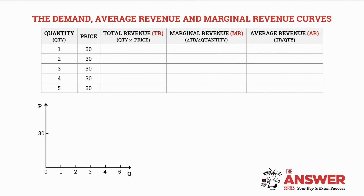We are now going to examine the revenue curves. Total revenue refers to all the income earned from the sale of goods and services, calculated as quantity times price. Marginal revenue refers to the additional income earned when an additional unit is sold, calculated as the change in total revenue divided by the change in quantity. Average revenue refers to the income earned per unit, calculated as total revenue divided by quantity. Let's fill in our table — don't forget all values are in rands.